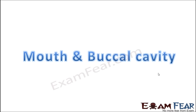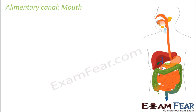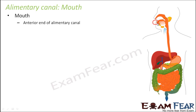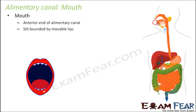We will start this discussion with mouth and buccal cavity. The mouth is basically the anterior end of the alimentary canal — anterior is the front end and posterior is towards the back. This is the starting point of the alimentary canal, and it is a slit-like structure bounded by movable lips, like a cave with a door.